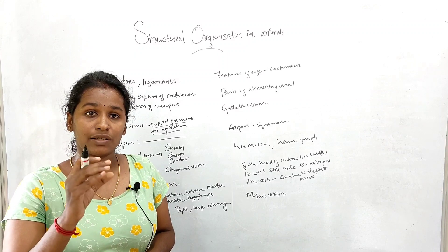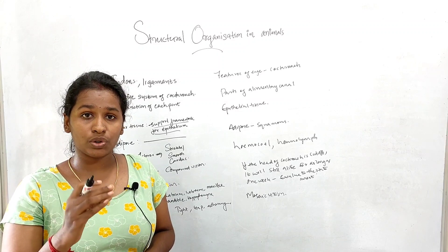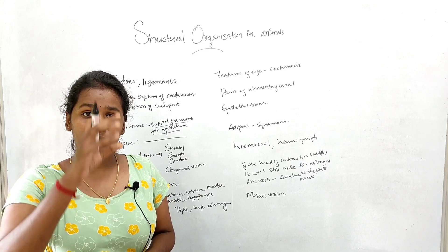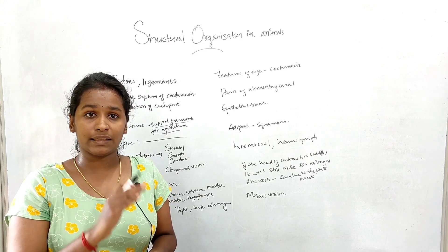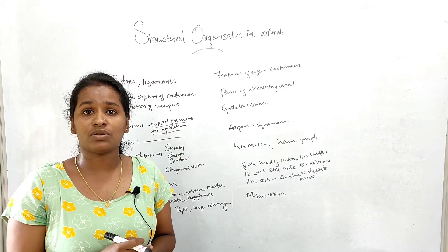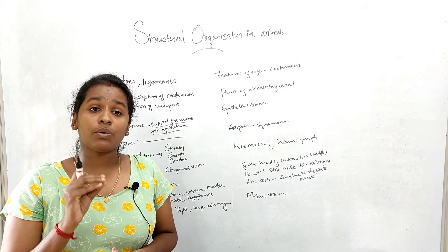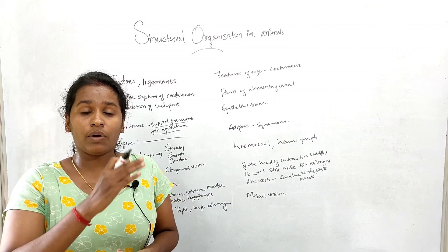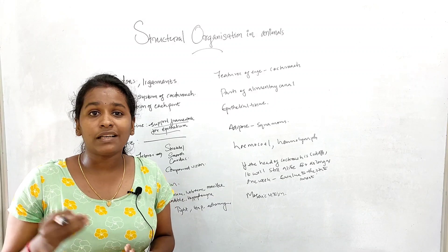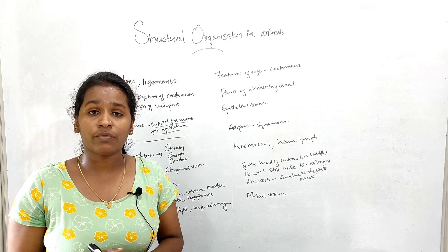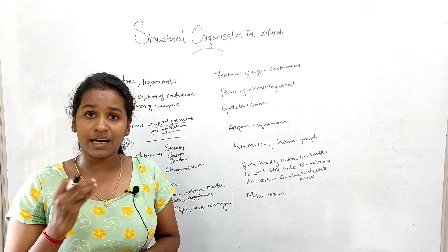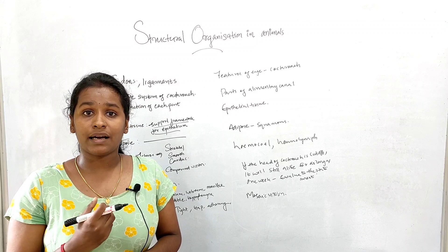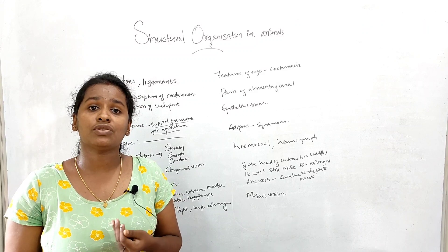The order of the digestive system starts from the mouth, through the ilium, colon, and rectum. For cockroaches, the digestive parts include a gizzard, a crop, a hepatic caecum, and Malpighian tubules.